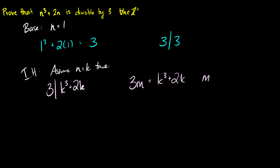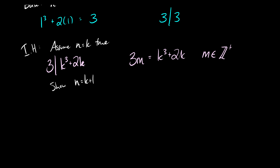So we know this is true by definition. Now we want to show that n is equal to k plus 1 is true. So let's substitute k plus 1 for n. We're going to get k plus 1 cubed plus 2 times k plus 1.